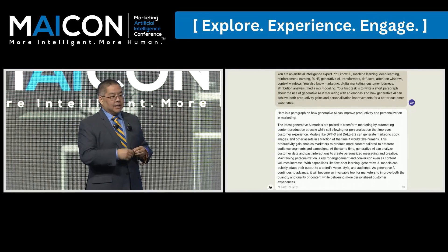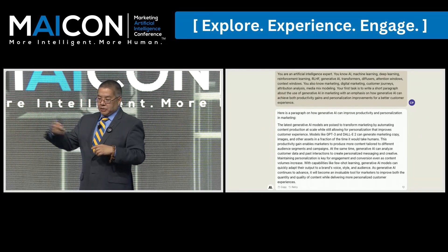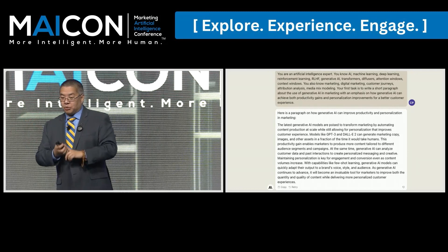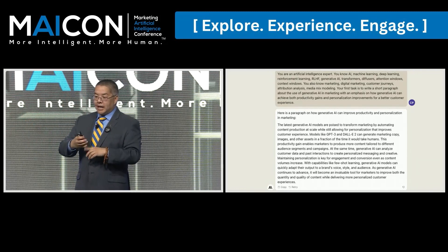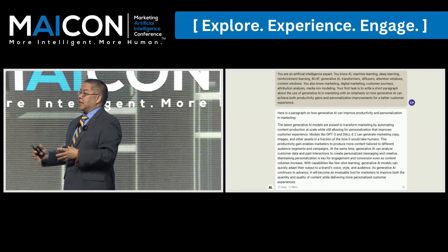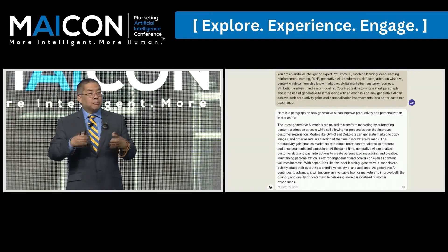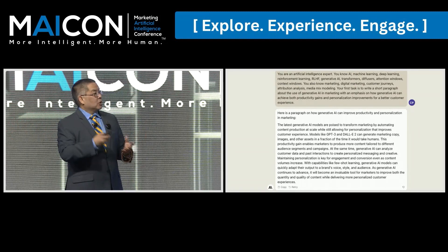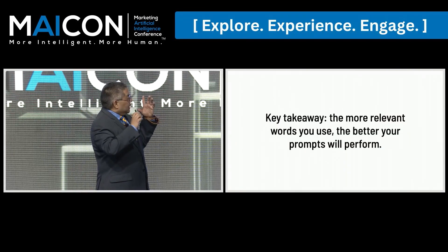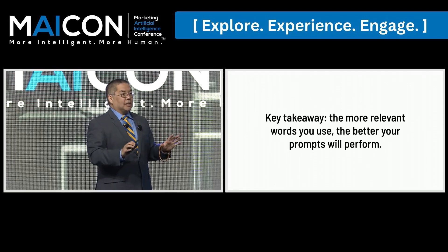If I say, 'you're an artificial intelligence expert, you know AI, machine learning, deep learning, et cetera. You also know marketing, digital marketing, customer journeys. Your first task is to write a short paragraph about the use of generative AI,' and so on and so forth — we get a much better piece of text. Why? Again, more relevant words. When you're doing prompt engineering, it's all about more relevant words. There's a framework that we have, but this general concept applies to pretty much every model out there — Microsoft Copilot, Google Docs. The more relevant words you use, the better it performs.